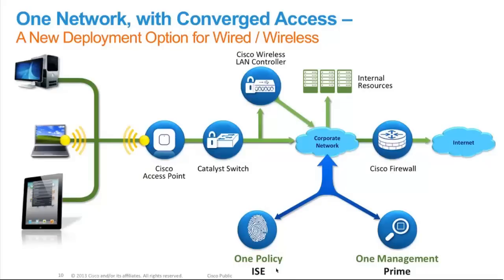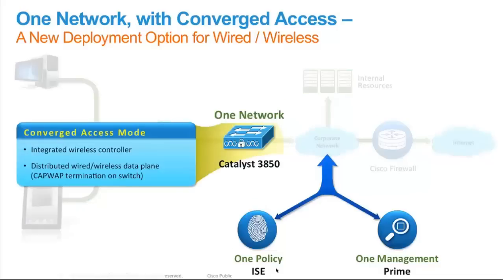You have to manage the wireless part and the wired part — two different policies. What we did was merge them together. That's not the way to go, so we converged them and came out with Catalyst 3850 switch. The 3850 switch has an integrated wireless controller, which means the CAPWAP tunnel from directly connected access points terminates at the 3850 level. I'm going to talk about the benefits of terminating the CAPWAP tunnel at 3850 in my upcoming slides.